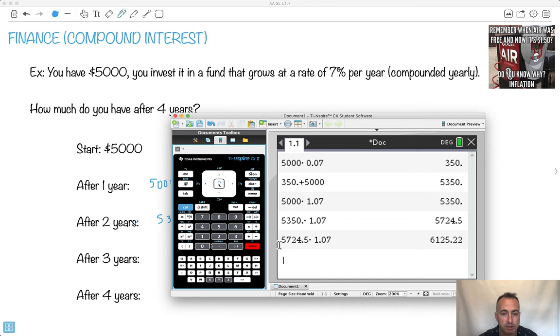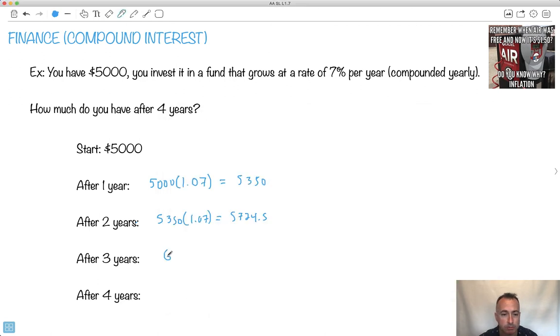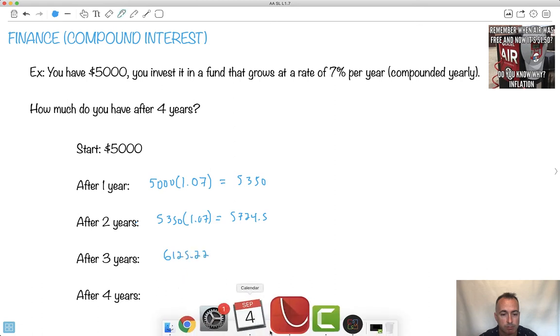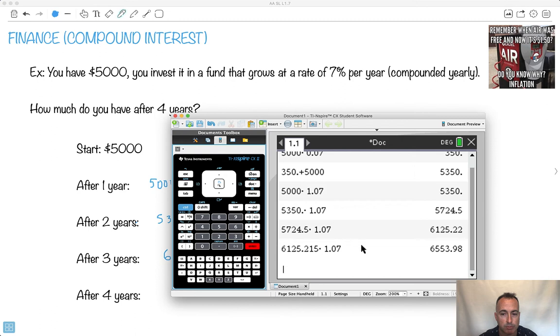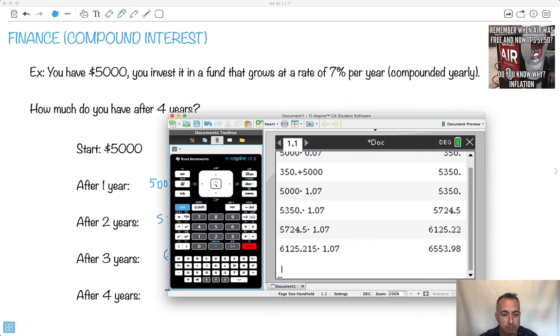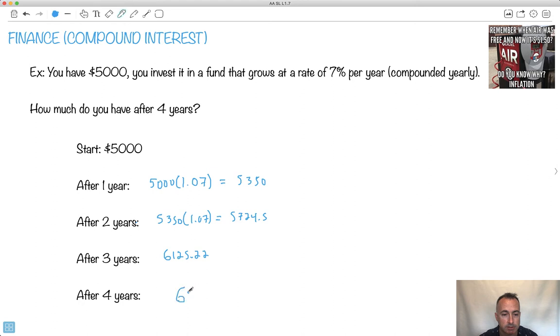So the next one then is going to be 6,125.22. I think you get the idea, right? And then I do it again one last time. And I say, boom, I have 6,553.98. Okay. So 6,553.98. This is how much I have remaining after the four years. Now that's kind of annoying, right? To have to keep doing this over and over again.